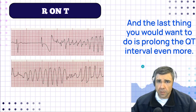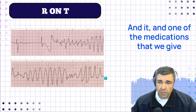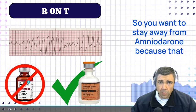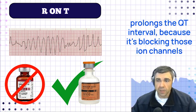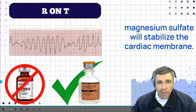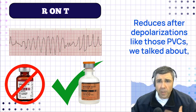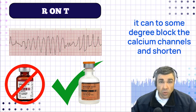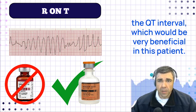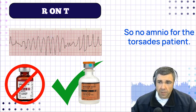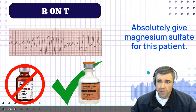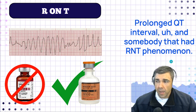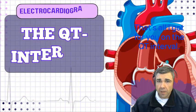The last thing you would want to do is prolong the QT interval even more. One of the medications we give for ventricular tachycardia outside of this type is amiodarone — but you want to stay away from amiodarone here because it prolongs the QT interval by blocking those ion channels. Instead, you want to administer magnesium sulfate. Magnesium sulfate stabilizes the cardiac membrane, reduces afterdepolarizations like those PVCs, and can to some degree block calcium channels and shorten the QT interval. So: no amiodarone for the torsades patient — absolutely give magnesium sulfate. You are likely dealing with a prolonged QT interval in someone who had R on T phenomenon.